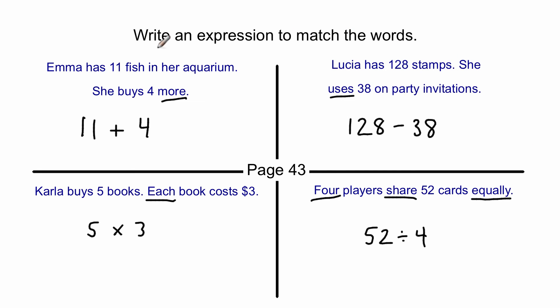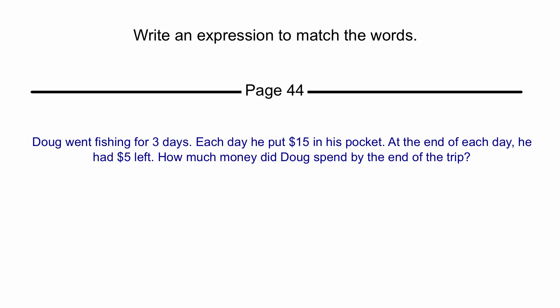All right, so the first part of this is just writing an expression to match some words. All right, now look, these things get longer. Here's a big, long word sentence, like one, two, three, four sentences. And you have to interpret that and write an expression. Now remember, you're not coming up with an answer. You're not coming up with a number at the end. You're coming up with the expression or the number sentence that represents all of these words. So let's read them carefully.